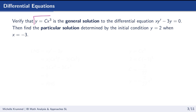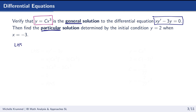Let's practice verifying a solution. We're told that y equals cx cubed is the general solution to the differential equation xy prime minus 3y equals 0. We're also asked to find the particular solution given the initial condition y equals 2 when x equals 3. The general solution has an unknown constant of integration c; if we can solve for c, we call it a particular solution. Let's first verify by computing the left-hand side: xy prime minus 3y.